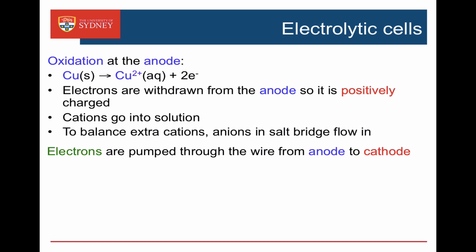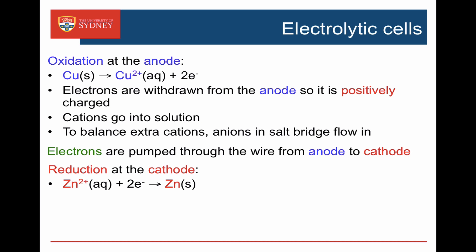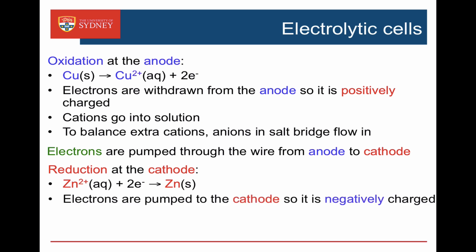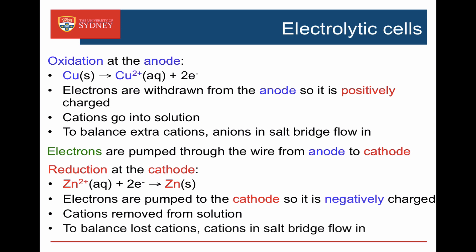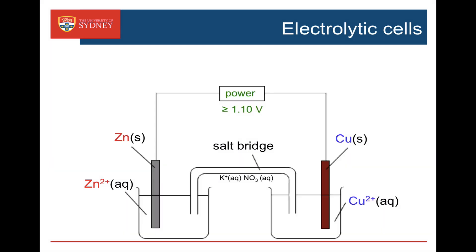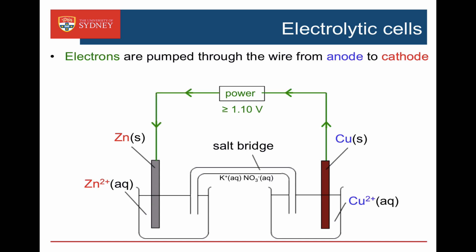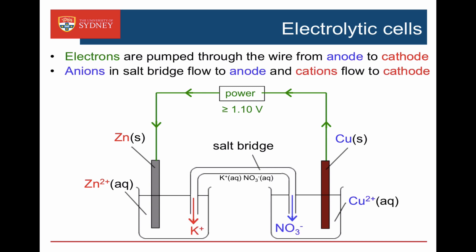We pump electrons through the wire from the anode to the cathode so that reduction can occur at the cathode. This time it's the zinc ions being reduced to zinc metal. As we're pumping electrons to the cathode, it is the cathode that is negatively charged. We're taking zinc ions out of solution, removing cations, and in order to make up for that, cations in the salt bridge flow in. So in our electrolytic cell, we provide enough power to reverse the reaction — anions in the salt bridge flow into the anode side, and cations flow into the cathode side.